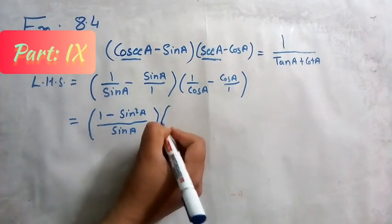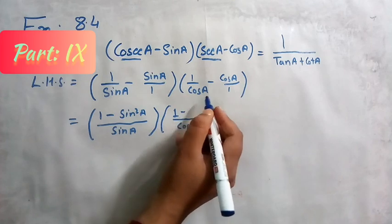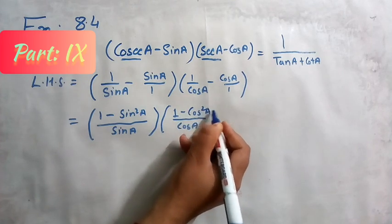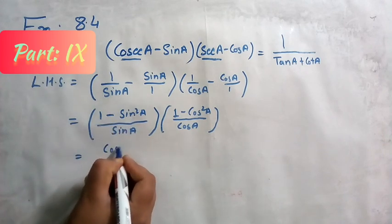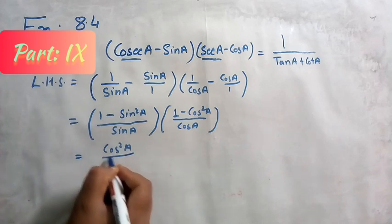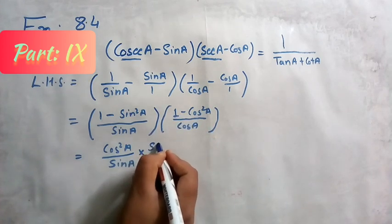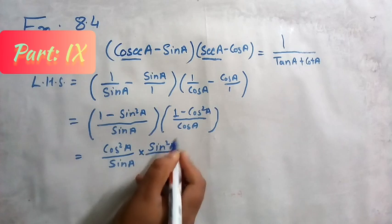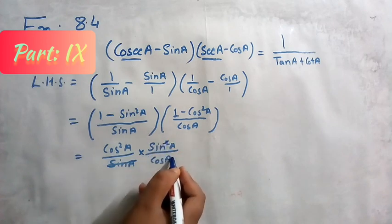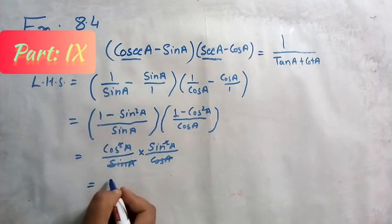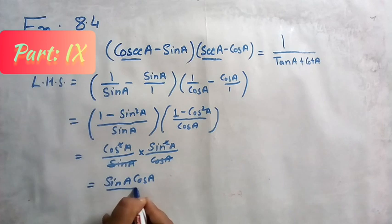Replacing values: 1 - sin²A = cos²A, so the first factor is cos²A/sinA. And 1 - cos²A = sin²A, so the second factor is sin²A/cosA. Multiplying them: (cos²A/sinA) × (sin²A/cosA). One cosA and one sinA cancel, leaving sinA·cosA.